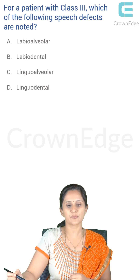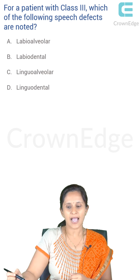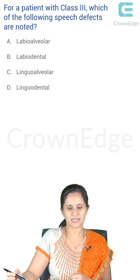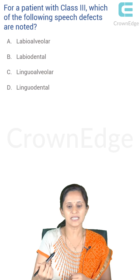For a patient with Class 3 malocclusion, which speech defects are noted? Labiodental syllabi are affected because the mandible is placed anteriorly and the lip is not able to articulate with the upper teeth. Consonants like S and Z are affected in anterior open bite with a large gap between incisors. Lingual alveolar sounds are affected with irregular incisors, especially lingual position of maxillary incisors. Labiodental specifically for Class 3; lingual dental for anterior open bite.